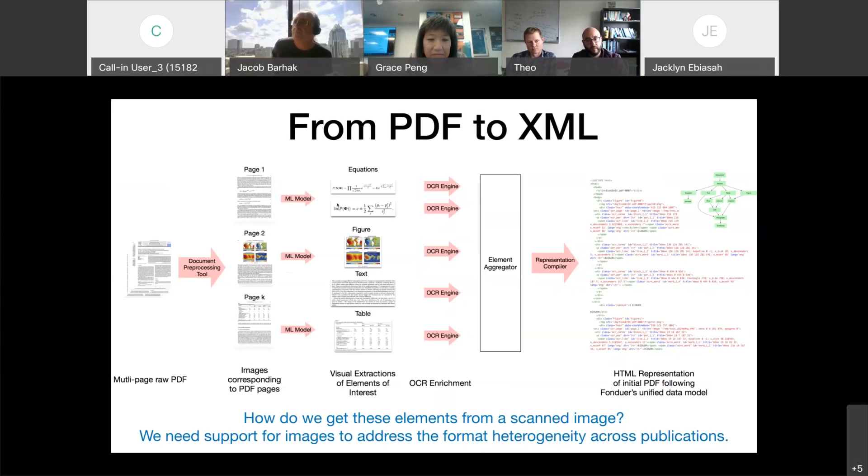We actually start by processing this as a vision problem. So for each PDF, first we have the corresponding images, the images that correspond to the different pages, and then applying machine learning and specifically having a new deep learning model that I will introduce next.